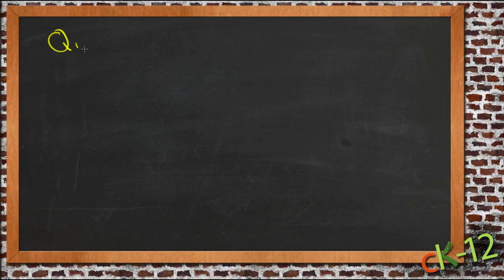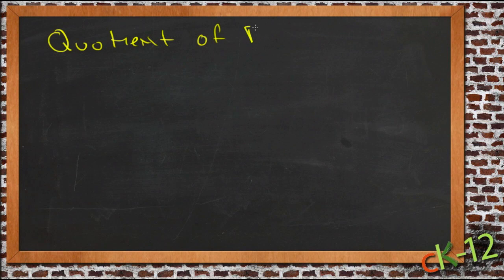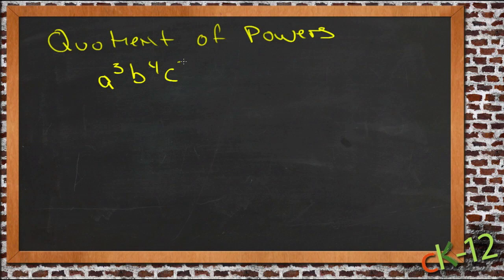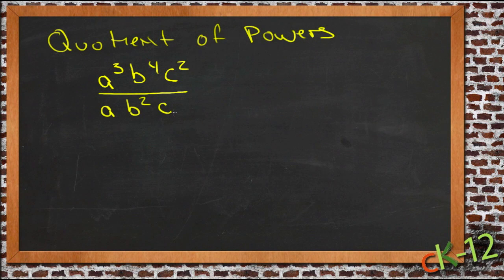Finding the quotient of powers means that you are finding the result of dividing numbers which have powers associated with them. For example, maybe you have a to the third, b to the fourth, c squared, and you're dividing that by a, b squared, c. So we're taking the quotient — the division — of numbers which are raised to some power.